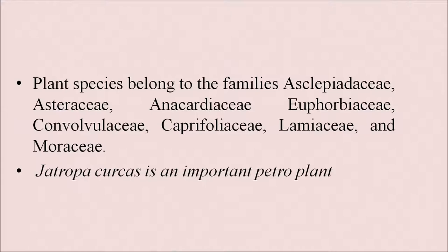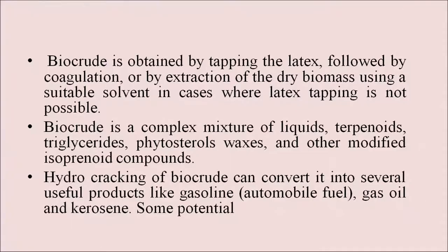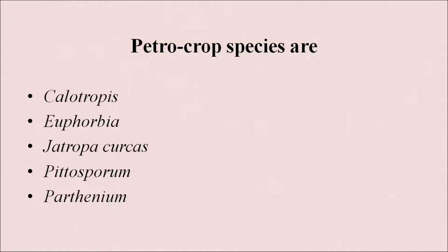Jatropha curcas is an important petroplant. Biocrude is obtained by tapping the latex followed by coagulation, or by extraction of the dry biomass using a suitable solvent in cases where latex tapping is not possible. Biocrude is a complex mixture of liquids, terpenoids, triglycerides, phytosterols, waxes and other modified isoprenoid compounds. Hydrocracking of biocrude can convert it into several useful products like gasoline, gas oil and kerosene. Some of the petrocrop species are Calotropis, Euphorbia, Jatropha curcas, Pittosporum and Parthenium.